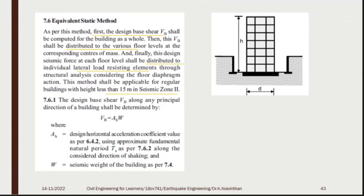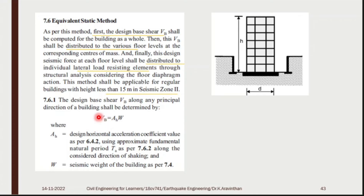The Equivalent Static Method, also called design base shear VB, is used when you have a structure with base dimension D and overall height H. First, you find the base shear using the formula VB equals AH into W, where base shear is abbreviated as VB — V for shear, B for base.